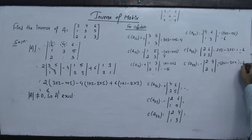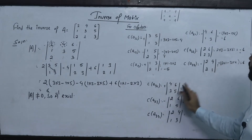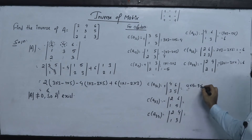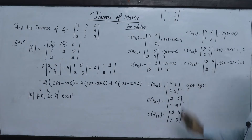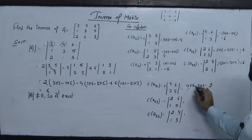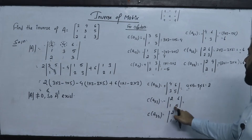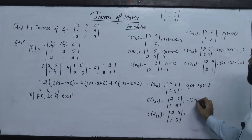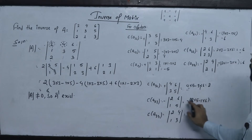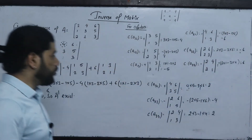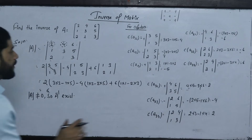Continuing: 4 into 5 minus 3 into 6 = 20 minus 18 = 2, plus 2 into 5 minus 1 into 6 = 10 minus 6 = 4, plus 2 into 3 minus 1 into 4 = 6 minus 4 = 2. So we now have all cofactor values.